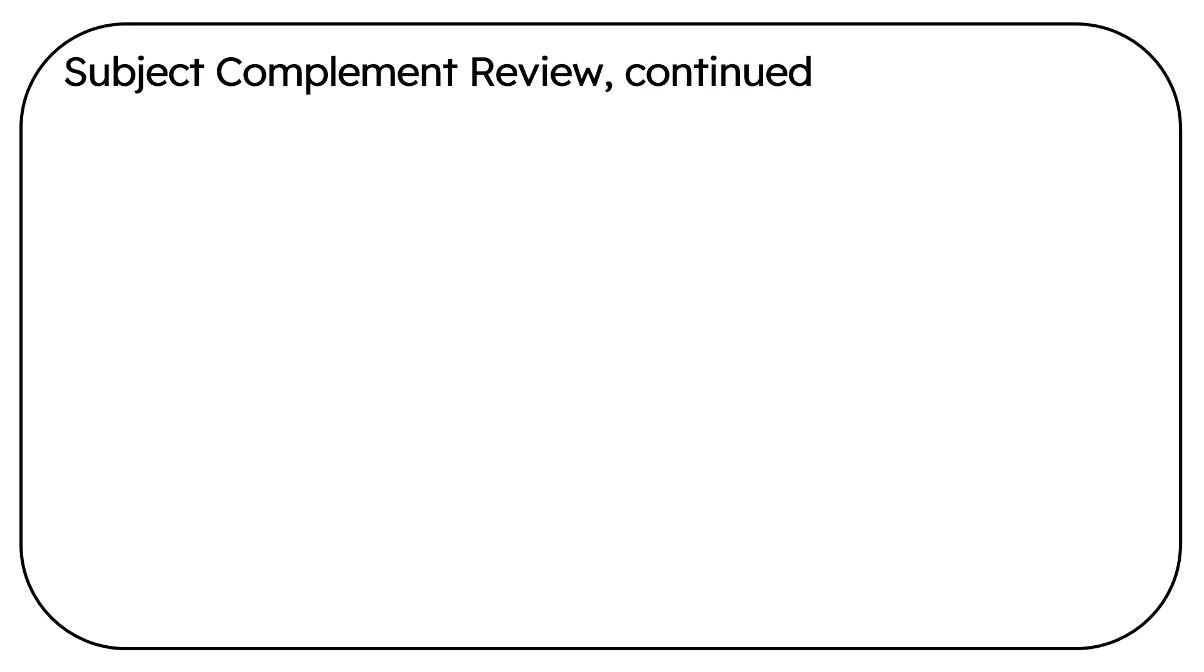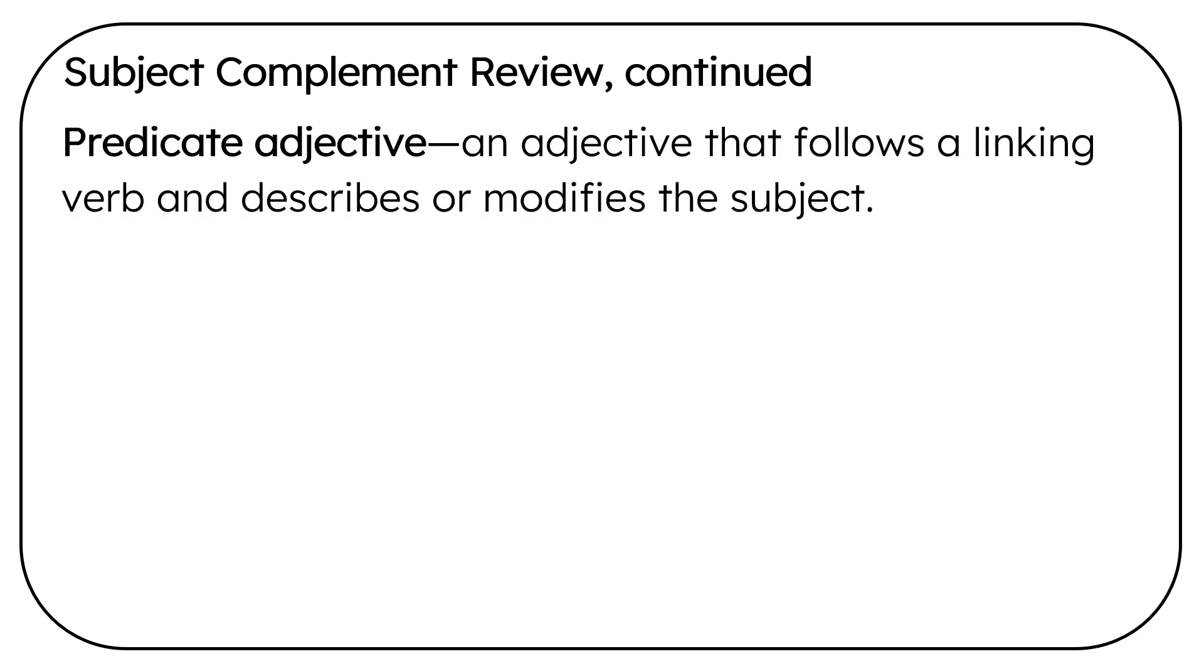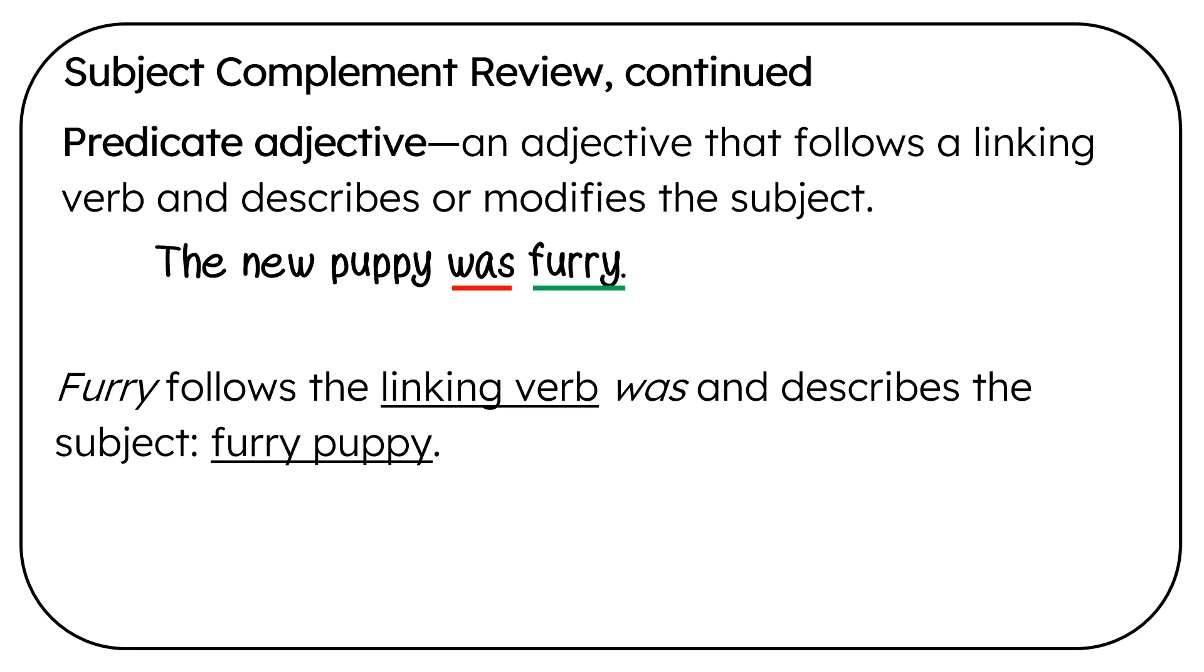Subject Complement Review continued. Predicate adjective: An adjective that follows the linking verb and describes or modifies the subject. The new puppy was furry. Was is the linking verb. Furry is the predicate adjective. Furry follows the linking verb was and describes the subject. Furry puppy.